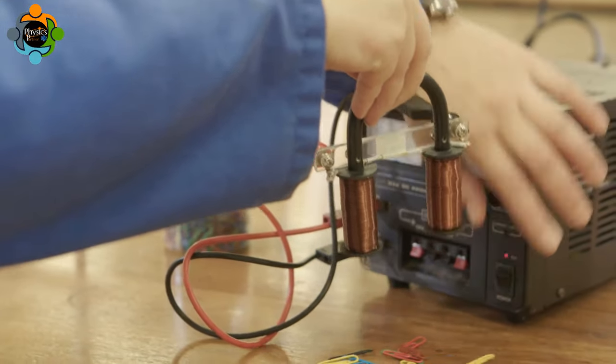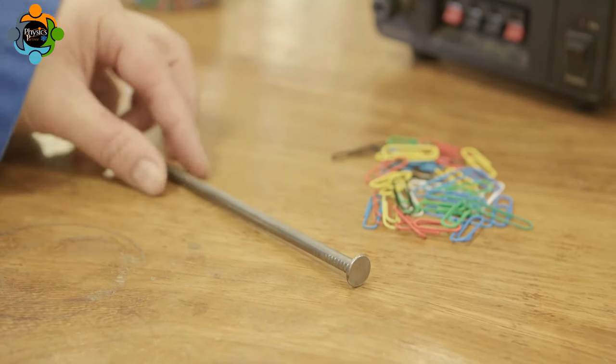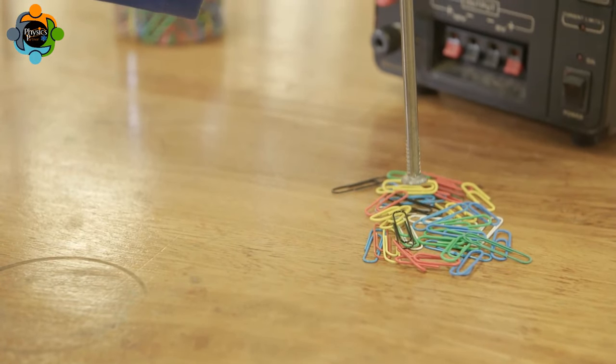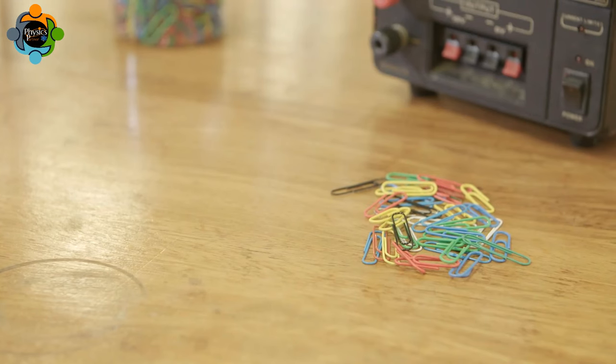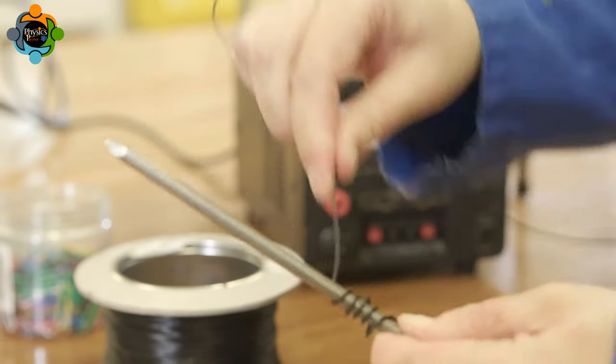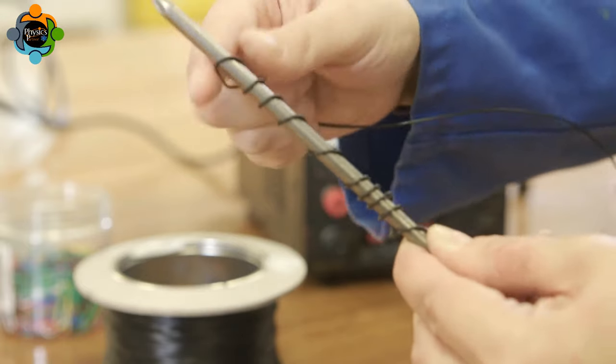Iron is a magnetic material, but the iron rod on its own does not attract any iron filings or paper clips. This shows that despite being magnetic, iron does not always act as a magnet.